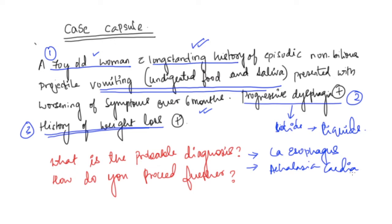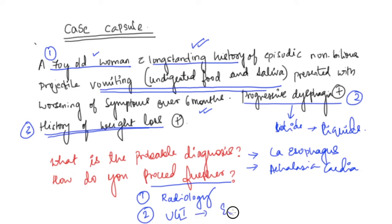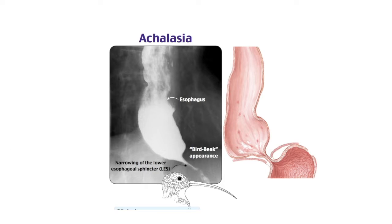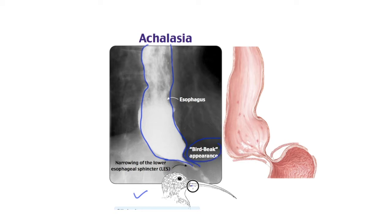With these differentials, we need to work up the patient. We will start with a radiological examination before going invasive, and then definitely do an upper GI endoscopy. We went ahead and did a barium swallow. The image showed the esophagus becoming narrowed in the lower part, giving rise to what is called the bird beak appearance — just like the beak of a bird. This condition is known as achalasia cardia.